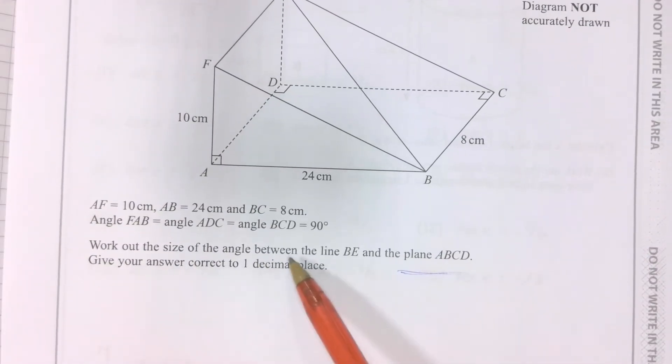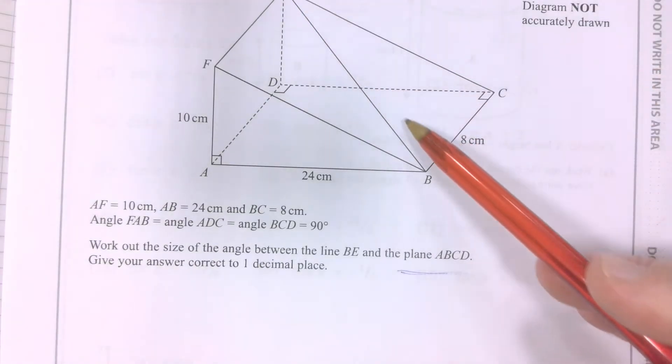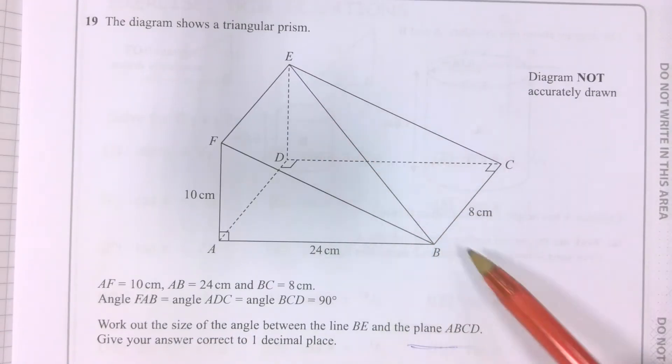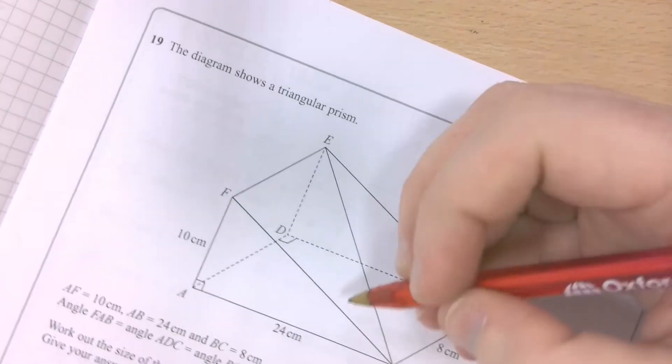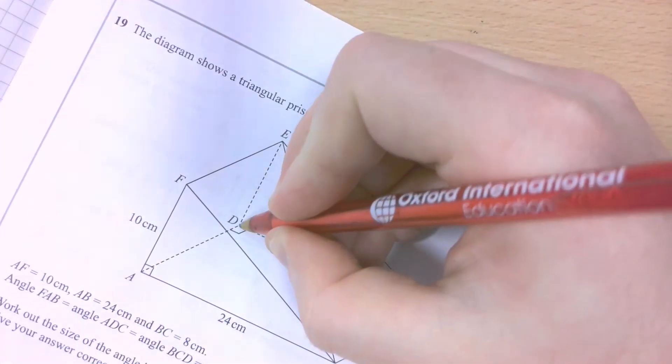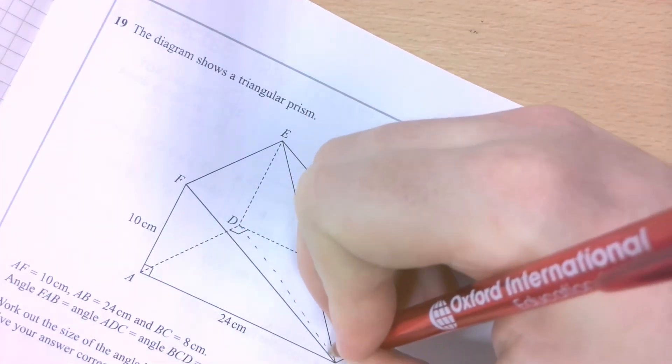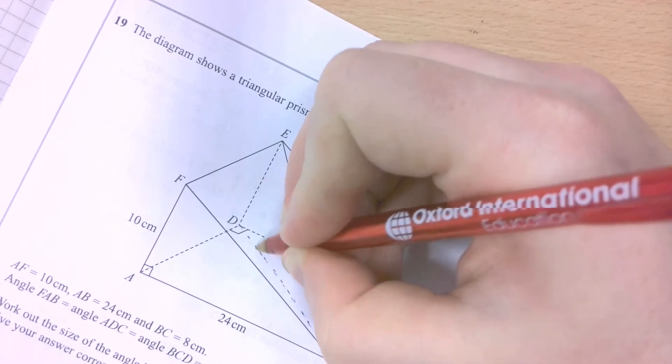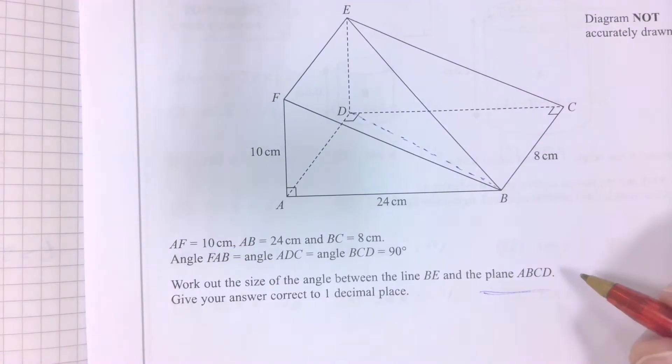Well, I'm looking for the size of the angle between this diagonal line and effectively the floor. The best way to do that is to form two-dimensional shapes within this three-dimensional object.